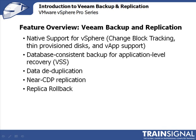Veeam Backup also has native support for vSphere, which includes features like change block tracking for fast incremental backup. It supports thin-provisioned disks and VAP support. It provides data-consistent backups for application-level recovery, meaning it uses Microsoft's VSS — Volume Shadow Services — to quiesce file systems and applications, assuming you have the right operating system, to ensure those applications will be fully recoverable once backed up. Veeam Backup also provides data deduplication and near-CDP replication, meaning Veeam's replication features come close to those very expensive, hardware-based, continuous data protection replication feature sets found on enterprise SANs.